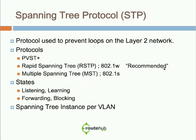Next is Spanning Tree Protocol. The purpose of Spanning Tree Protocol is to prevent loops on a layer 2 network. Loops on a network are bad and commonly occur when things are fully meshed. The first common variant is PVST — Per VLAN Spanning Tree — which can be called legacy Spanning Tree.